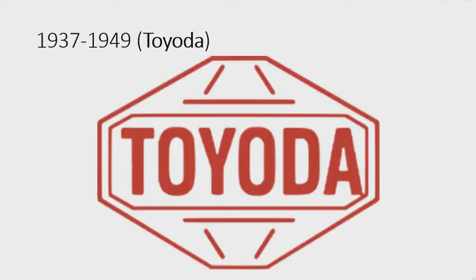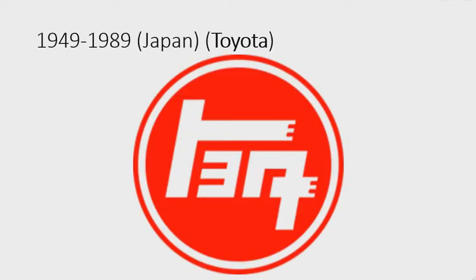I hope you like it. 1937 to 1949: here is the original name of Toyota — 'Toyoda'. There is a red octagon, and inside there are six lines, a rectangle, and inside the rectangle there is the word 'Toyoda' in red text. 1949 to 1989, in Japan only, they changed its name to Toyota. There is a red circle on a white and red outline.